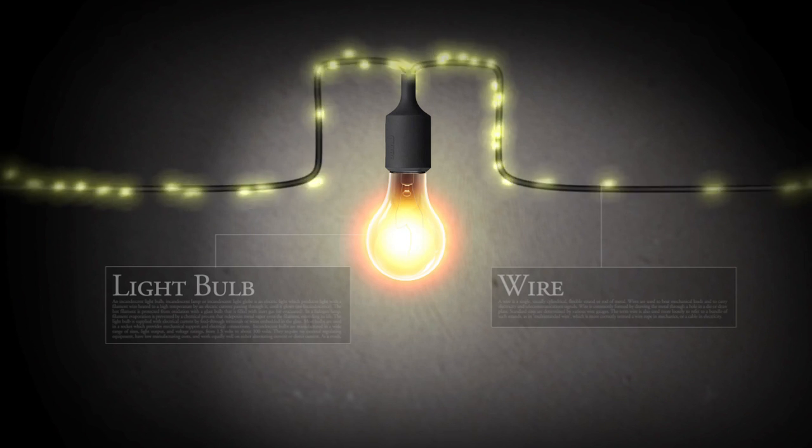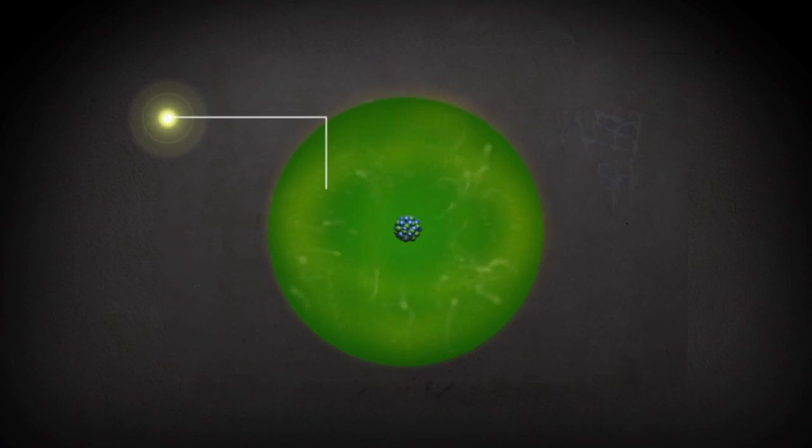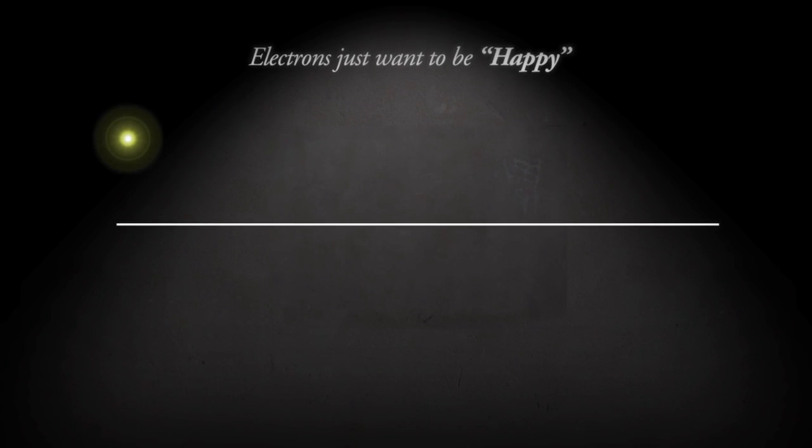So, how do you get electrons to move through a wire if they're happy just buzzing around as part of an atom? Well, it turns out that electrons just want to be happy. And for electrons, happiness is being at a lower energy level.